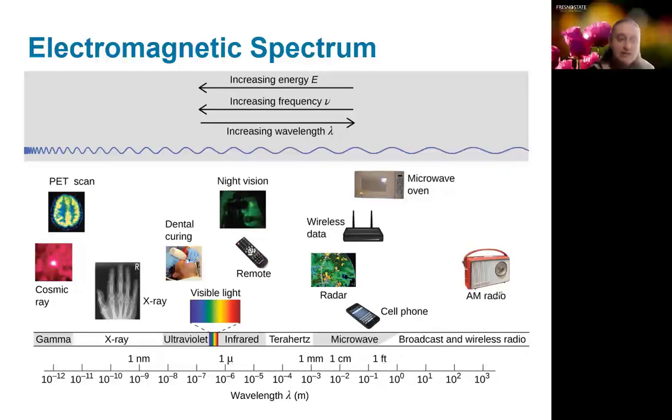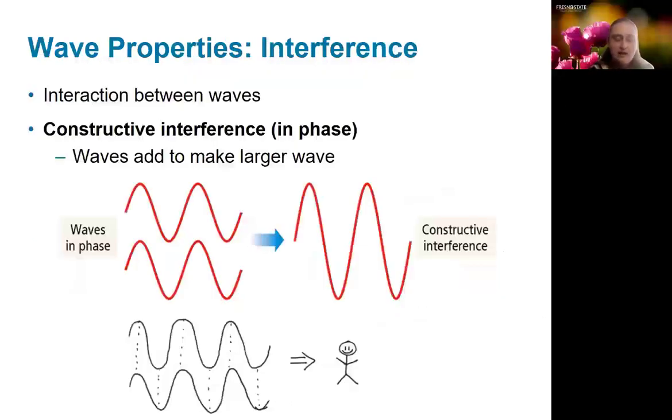So there's a couple of properties that are unique to waves. The first of those that we want to look at is interference. And interference is just an interaction between waves. So what happens when waves interact is if their phases are lined up, if their maxima occur at the same point, they're going to add together in what we call constructive interference, which gives a higher overall amplitude.